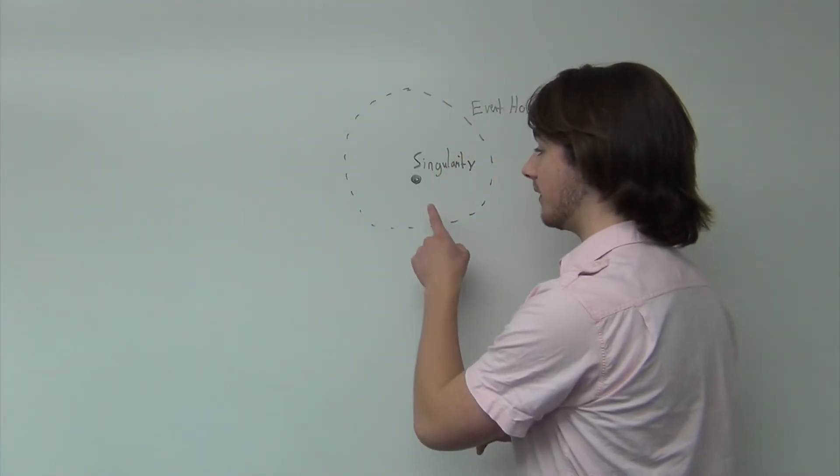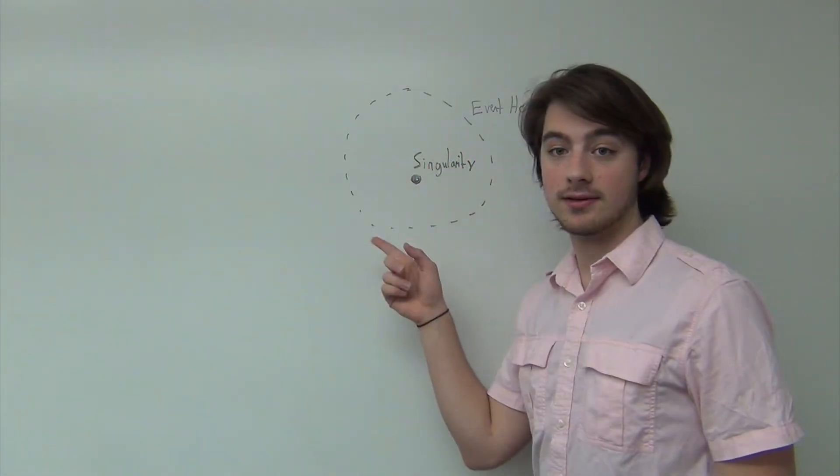Black holes are formed by the gravitational collapse of an object, usually a star but not necessarily so. They are composed of a singularity at which point all the mass is centered, an event horizon. Within the event horizon, nothing can move fast enough to escape, not even light.